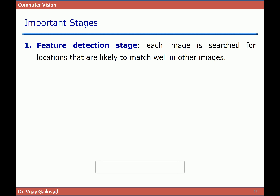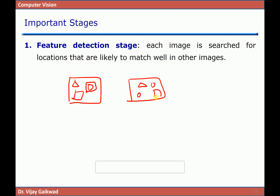There are some important stages during feature detection and matching. The first step is the feature detection stage, where each image is searched for locations that are likely to match well in other images. For example, if we have one image and are interested in a specific object, the feature detection process identifies that object and tries to find a similar region in a new image.